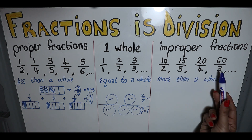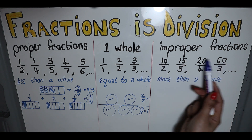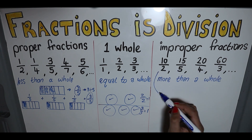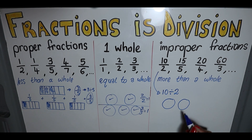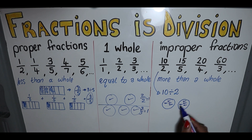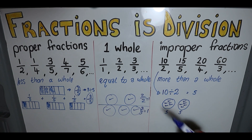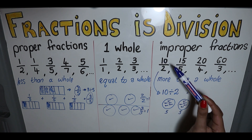Now let's look at improper fractions — this is when your answer will be more than a whole. Your number on top, the amount you have, will be more than the number of groups you're dividing into. For example, if I have ten sweets and share between two people, I count out ten sweets and each person gets five. Is five more than a whole? Yes — it's more than one, so you get more than one. This is an improper fraction: when the total you have is more than the groups you're dividing into.